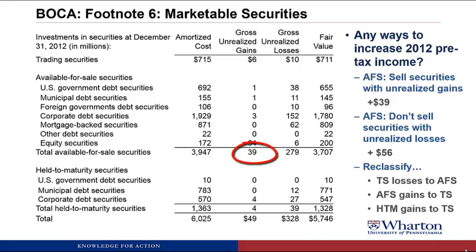The same thing applies to held to maturity securities that have gains. We had held to maturity securities with gross gains of four. That doesn't show up anywhere on the financial statements, but if we had reclassified them as trading securities they would have been marked to market and that four would have gone through the income statement, increasing pre-tax income.